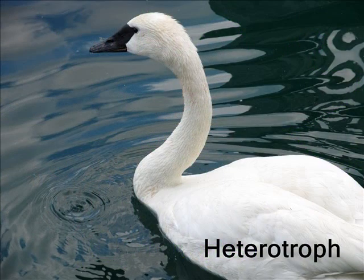Heterotrophs are those organisms that cannot produce their own food and feed on other organisms. In this example we have a picture of a swan. The swan is a heterotroph that feeds off of other animals. This brings us to our next point: the relationship between two animals in an ecosystem.